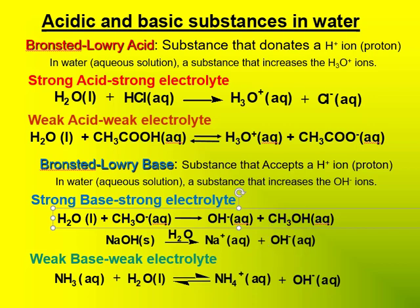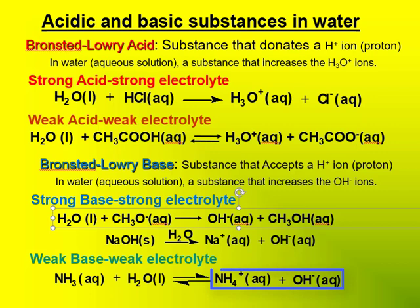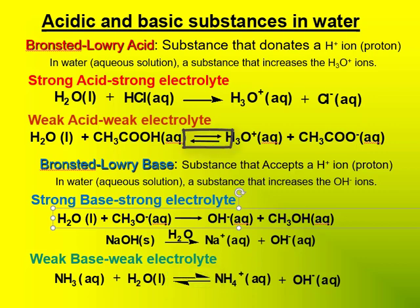Sodium hydroxide, like the other hydroxides mentioned, are solids at room temperature. Simply by placing them in water, they dissolve 100% and increase the hydroxide ion concentration. A weak base is also a weak electrolyte. Ammonia, NH3, is a common example. It accepts an H+ ion, or a proton, from the water, forming NH4+, which is ammonium, and hydroxide. The equilibrium arrows are indicative of a weak base, just as they are indicative of a weak acid.